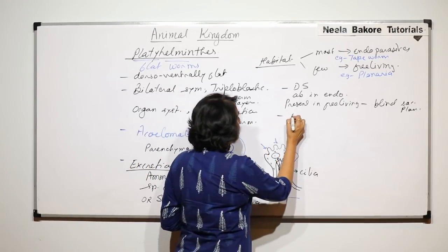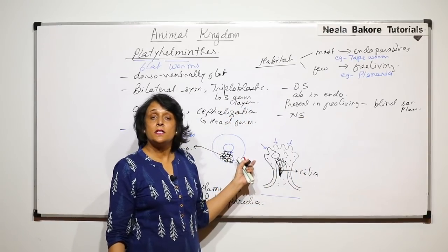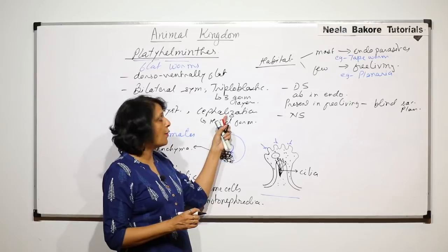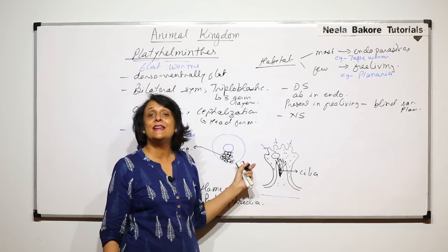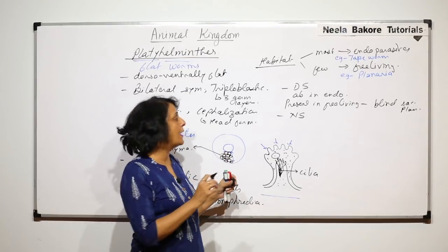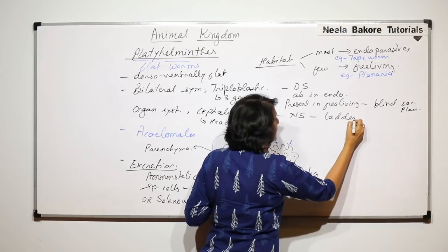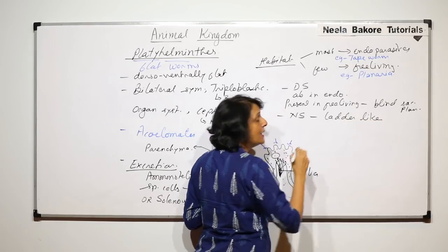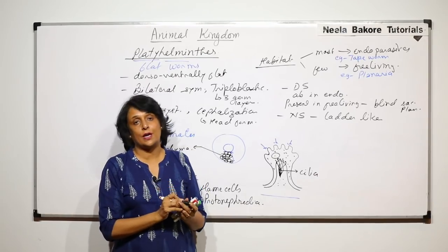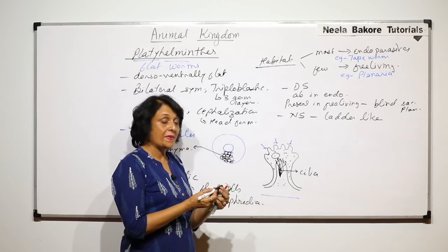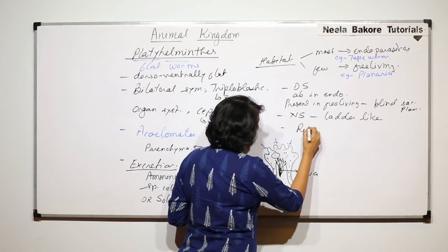For the nervous system, though there is cephalization — that is head formation — a brain-like structure has not developed yet. They have a network of nerve fibers and the nervous system is described as ladder-like, meaning there are nerves interconnected with the help of transverse connections.